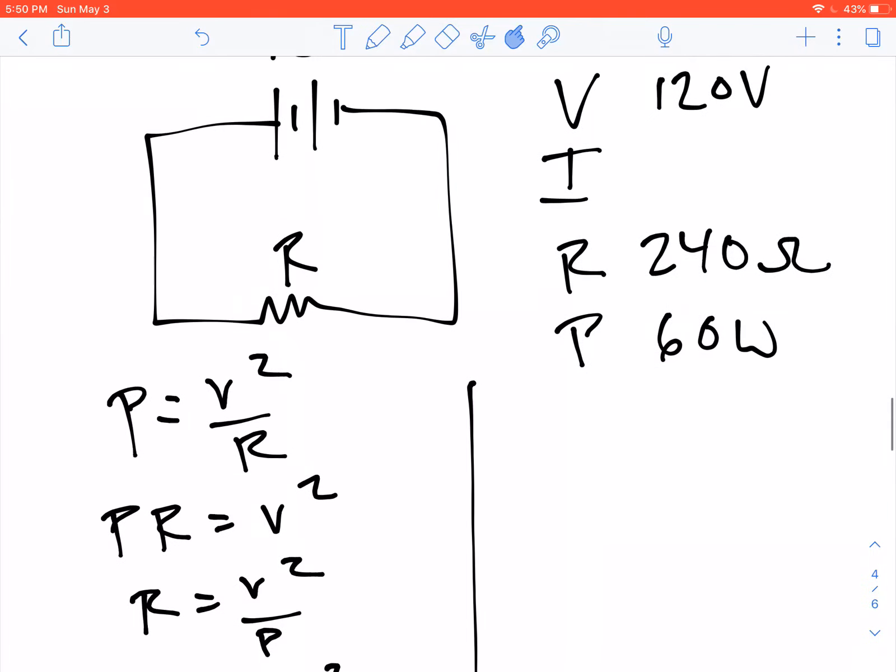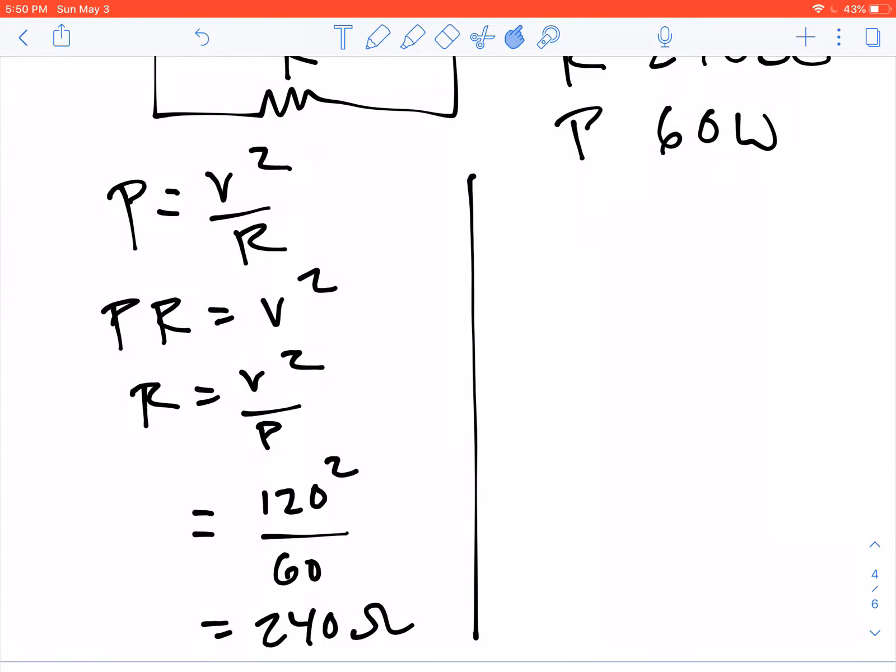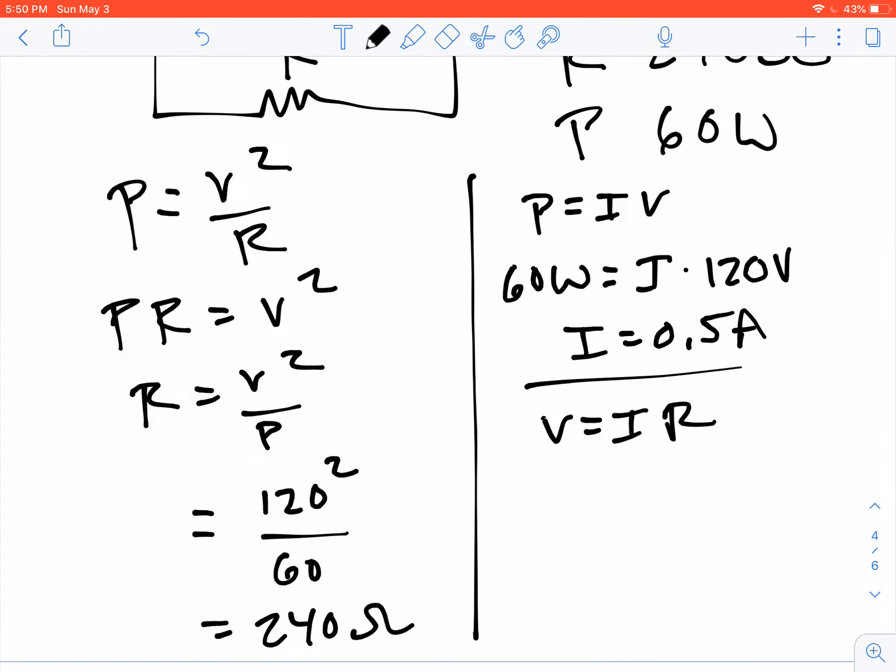Now, if we wanted to calculate the current, we could do this in two different ways. We can do P equals IV. We have 60 watts equals I times 120 volts. We solve for I and we get 0.5 amps. We can also use V equals IR, giving us 120 equals I times 240, which gives I equals 0.5 amps. Solving it twice with two different formulas is a way to double check that you've done the problem correctly.